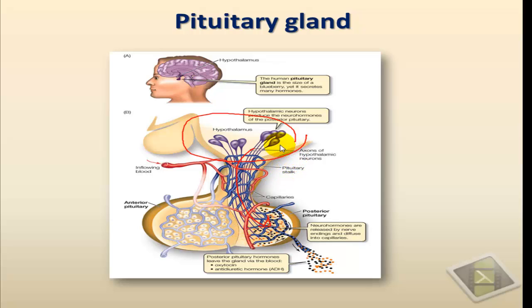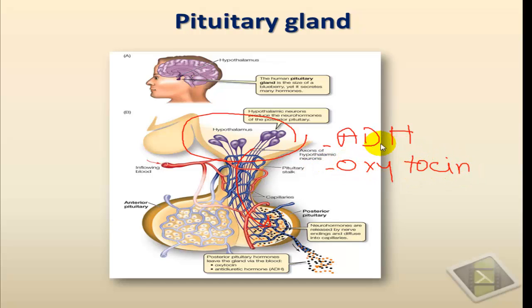Two important hormones are produced in the hypothalamus and released from the posterior pituitary gland: ADH, the antidiuretic hormone, and oxytocin. The antidiuretic hormone is involved in helping the body conserve water when the level of water drops in the body or when we lose lots of water to the outside, such as when we sweat in the heat. The second hormone, oxytocin, has several functions, but one of its main functions is helping the uterus deliver a baby and causing milk ejection during sucking.